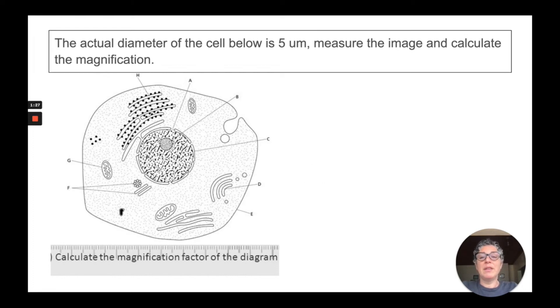Here is an example. The actual diameter of the cell below is 5 micrometers. Measure the image and calculate the magnification. When we measure the image and bring it down to our ruler, the size of the image in the drawing is 77 millimeters.